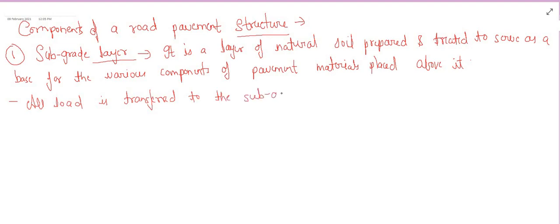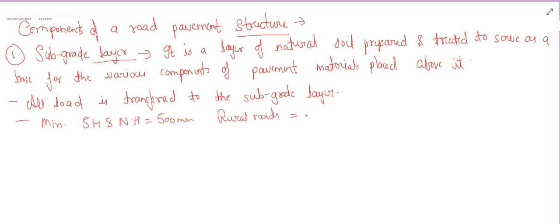Whatever traffic load is applied gets transferred to the subgrade layer, and from there to the natural ground present below it. Generally, the minimum thickness of the subgrade layer for a state or national highway is 500 mm, and for a normal rural road it is 300 mm, as specified in India.